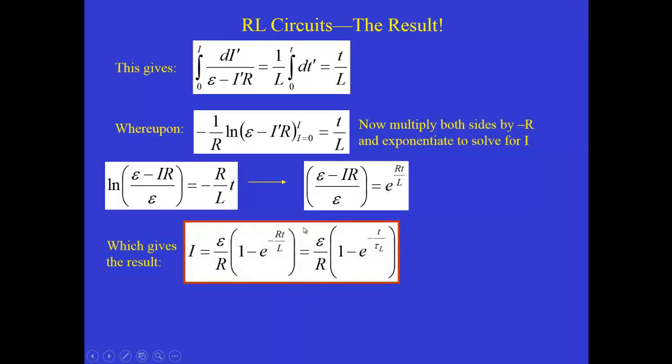So the result, once we take this equation and solve it for i, we've got to multiply both sides by epsilon and then do a little bit of algebra to solve for i. So we get i equals epsilon over R times one minus this exponential term. And the exponential term is e to the minus rt over L, where L is the self-inductance of the inductor.